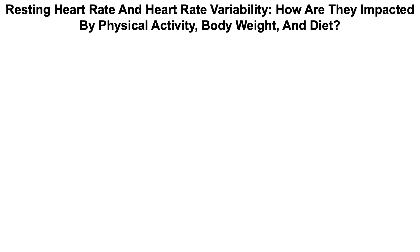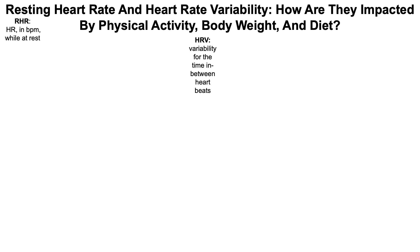Resting heart rate and heart rate variability — how are they impacted by physical activity, body weight, and diet? First, let's define a few terms. The resting heart rate, or RHR, is the heart rate in beats per minute (BPM) while at rest. And heart rate variability, HRV, is the variability in time between heartbeats. So if your heart rate is 60 beats per minute, it may beat once every 0.9 seconds, every one second, 1.1 seconds, et cetera. That variability is the heart rate variability.